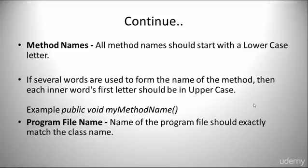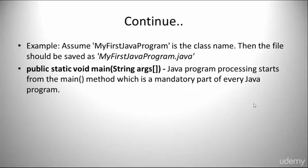When it comes to program file names, the name of the program file should match the class name exactly. Here is an example: assume My First Java Program is the class name. Therefore, when we get to naming the file, it should be saved as My First Java Program.